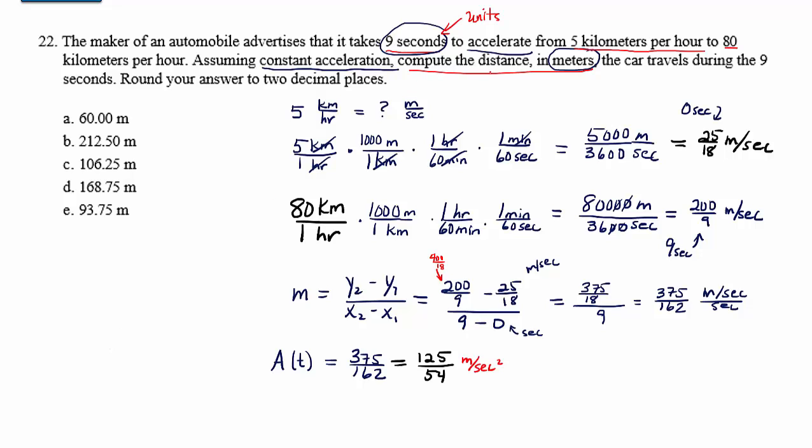Our goal is to compute the distance. Now, we know that the antiderivative of the acceleration is the velocity, and the antiderivative of the velocity is the position function. So if we go ahead and find the velocity, v of t is going to be the antiderivative of 125 over 54 with respect to t. In other words, it's going to be 125 over 54 t plus some constant, which is actually the initial velocity, right? Because that's going to be the value of the function at time zero. Now, we know the value of the function at time zero, because we know the initial velocity up here, 25 18 meters per second. So we're going to just say that is 25 18.